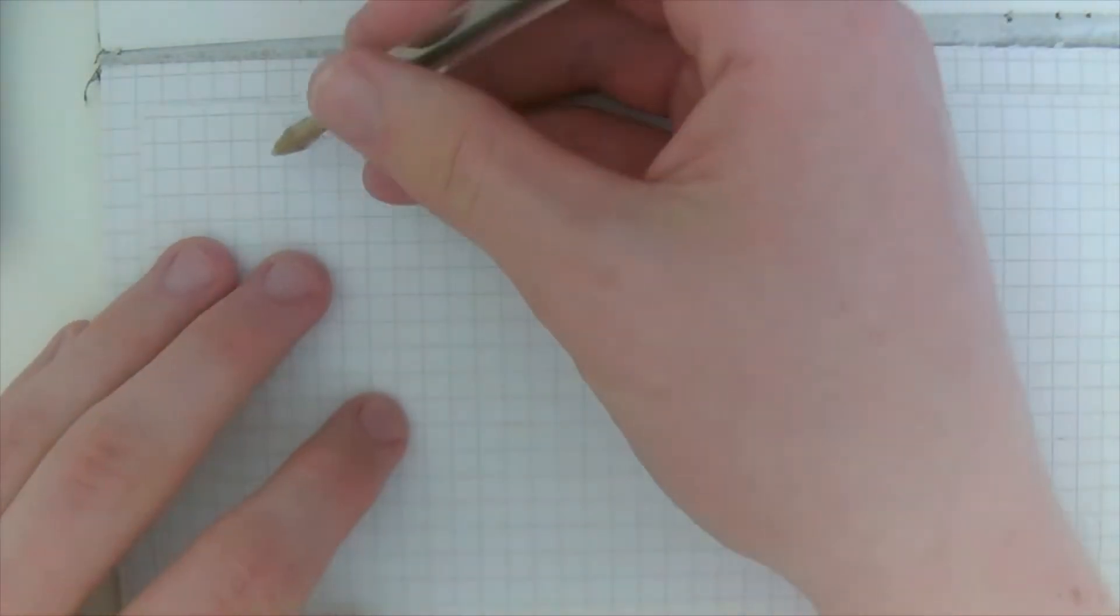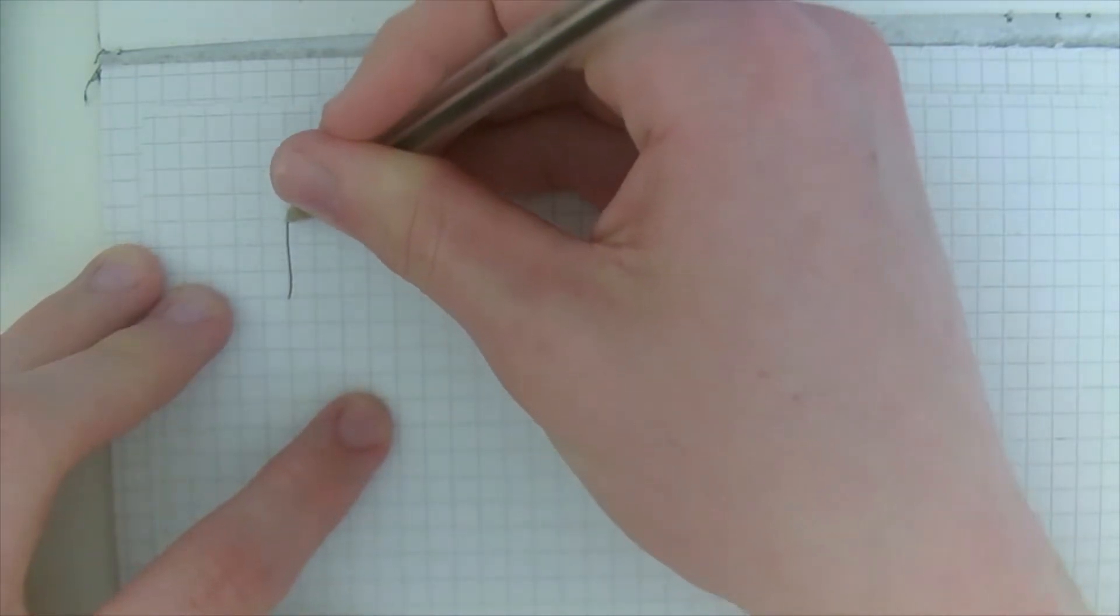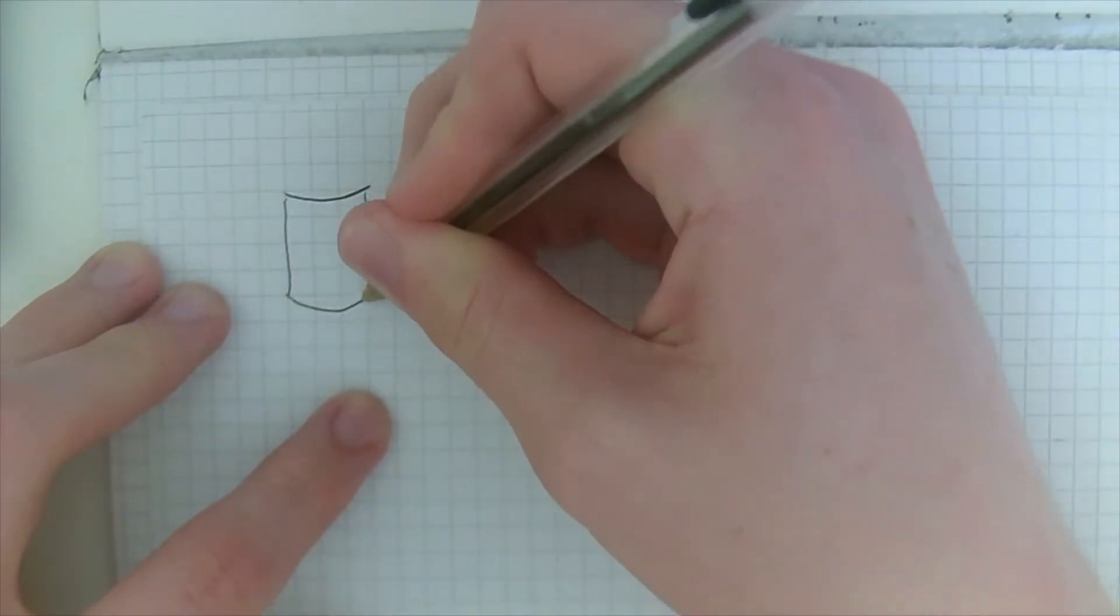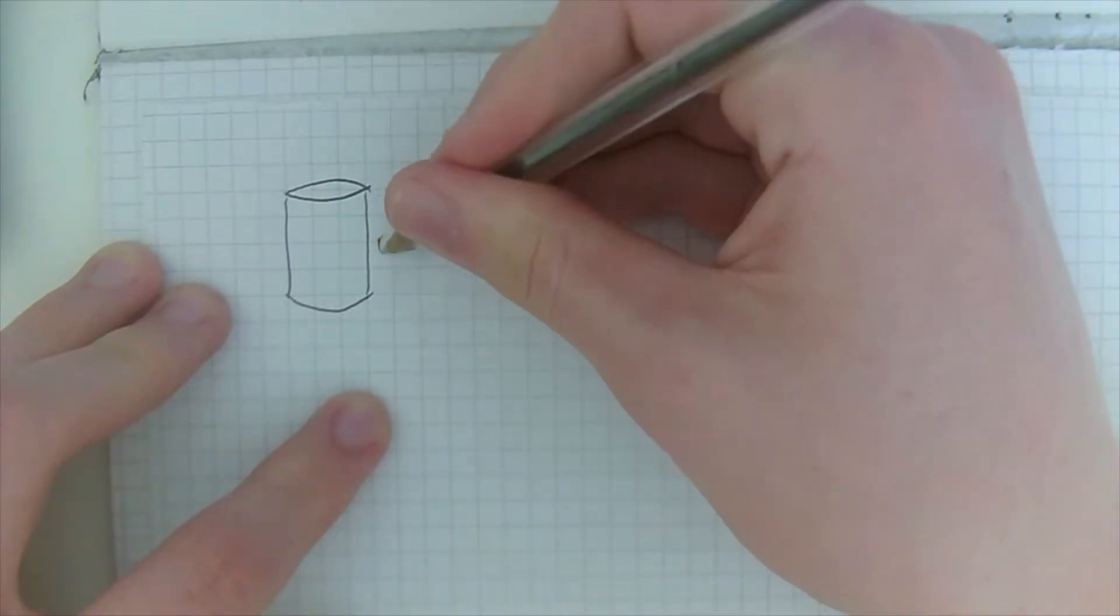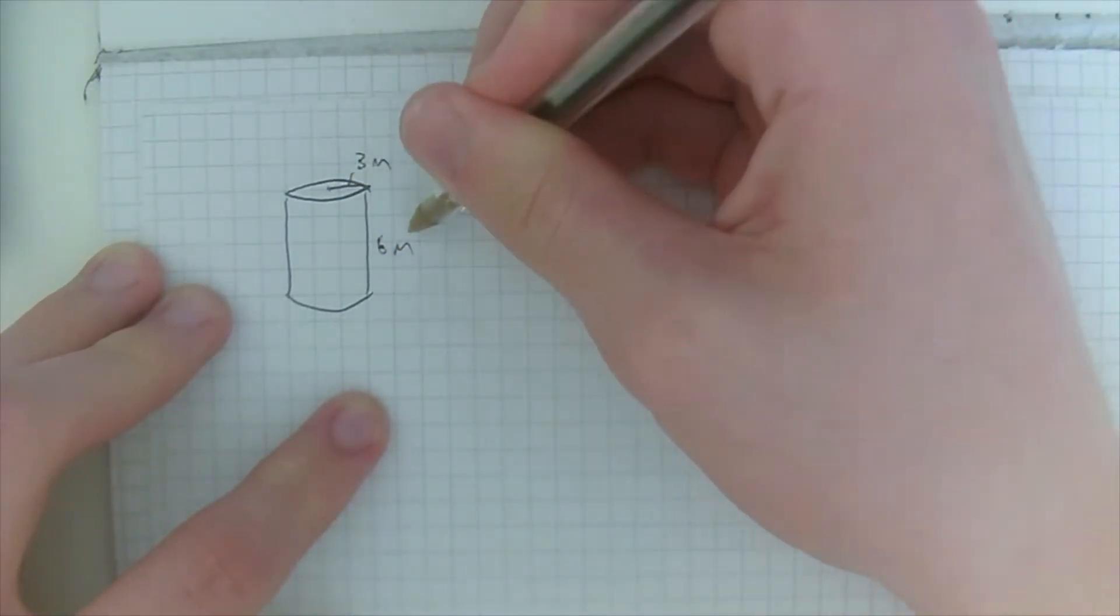Hello, today we're going to find the volume of a cylinder. So first I'm just going to draw a quick cylinder here. I'm going to give it a height of six meters and a radius of three meters, not that the meters matter.